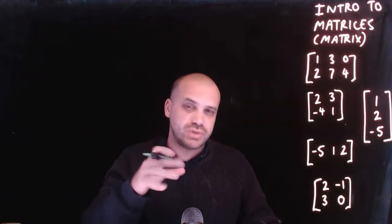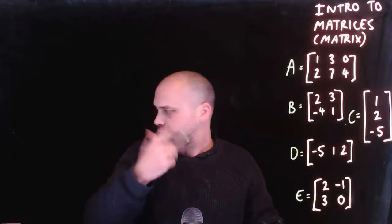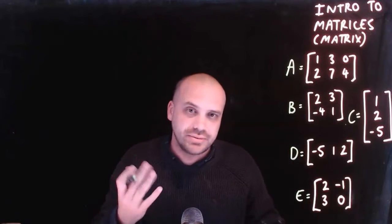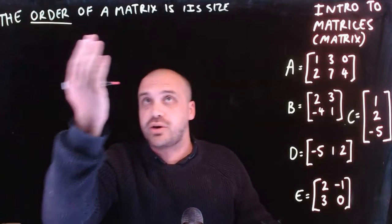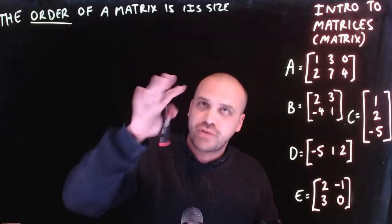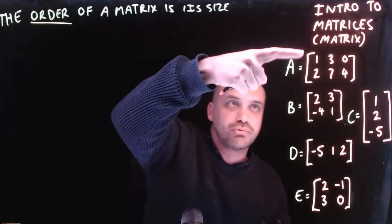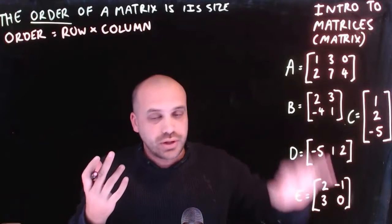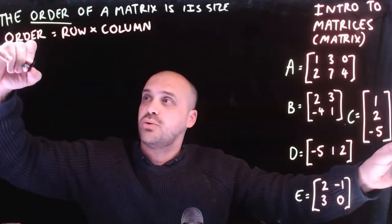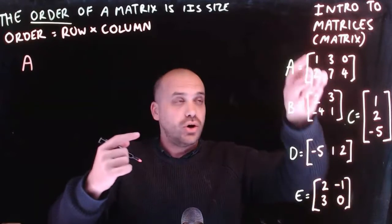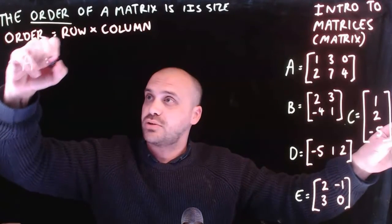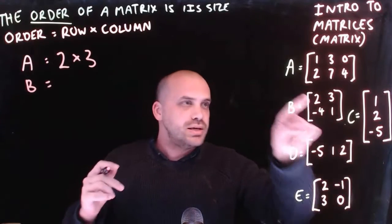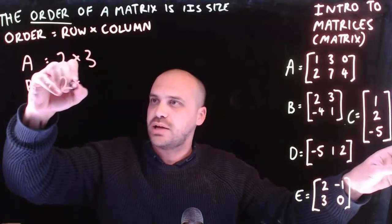It's convention that when we name matrices we use capital letters. So I can call this matrix A and I can call this matrix D. The first important thing you need to know is the order of a matrix — its size as measured by the number of rows and the number of columns. Matrix A has an order of 2 by 3. It is a 2 by 3 matrix. Matrix B is a 2 by 2 matrix.